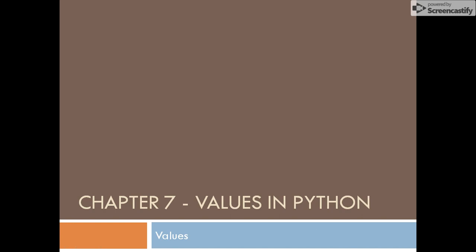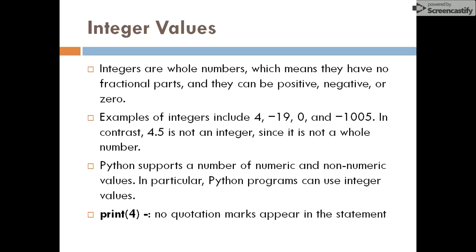Hello friends, so in chapter 7 about values in Python, welcome. In this video we will discuss what values are in Python. If you have learned about literal terms in C++ or Java and you are from that background, then you will understand. Basically, literals and values in Python are similar. Literals were the values that we provide to variables — for example, a equals 5, then 5 was an integer literal; a equals 5.5, then 5.5 was a floating point literal.